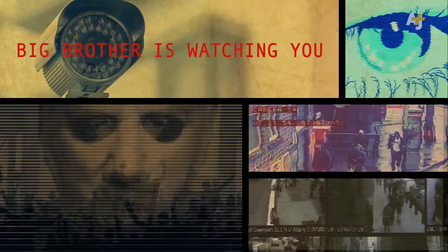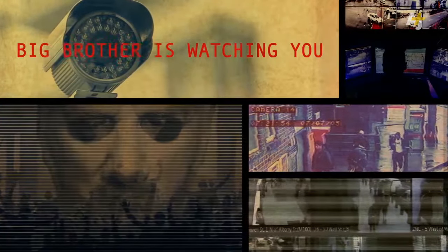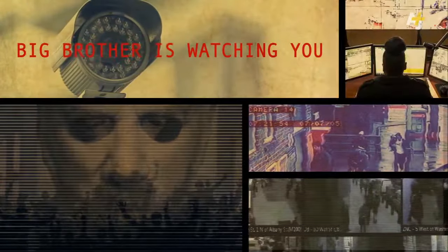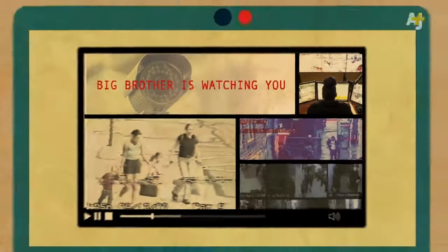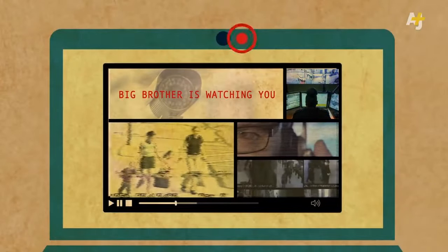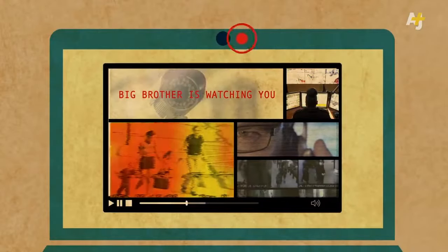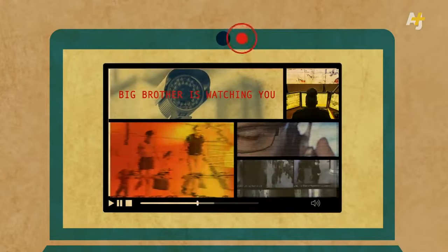In 1984, George Orwell described a world where televisions, called telescreens, also had cameras in them to spy on the viewers. Your computer, or even your mobile phone, has all the hardware to be turned into a spying device, just like a telescreen.